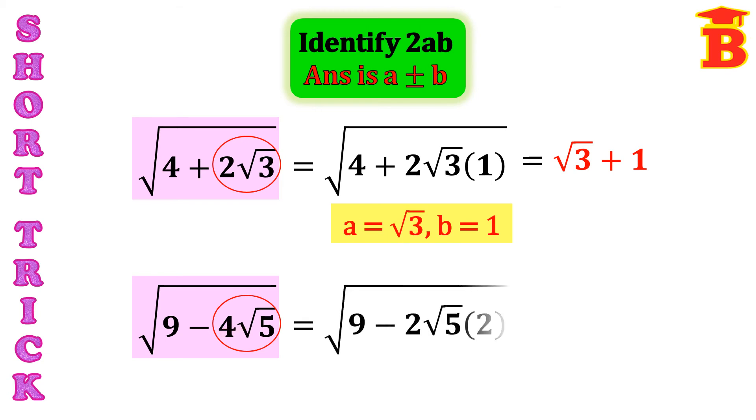So, this is equal to root of 9 minus, this 4, write it as 2 into 2. So, we get 2 root 5 into 2. So, now, this is exactly 2AB form.